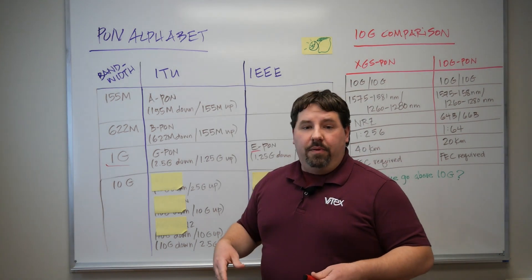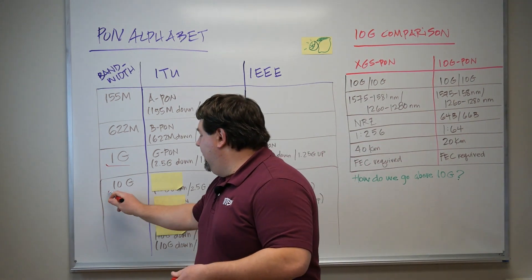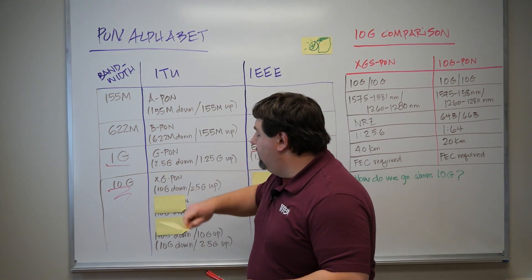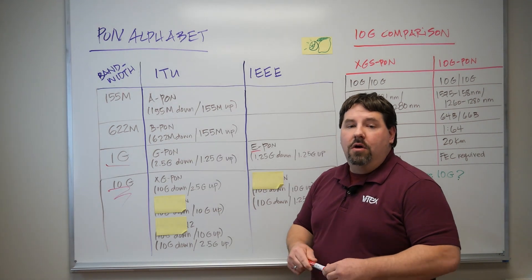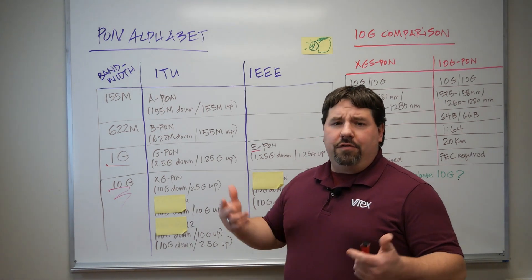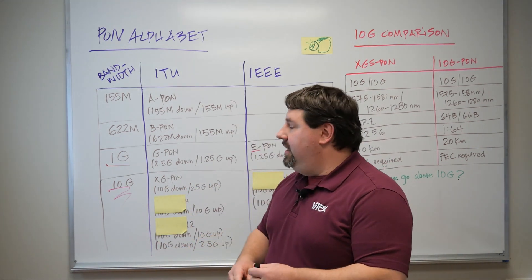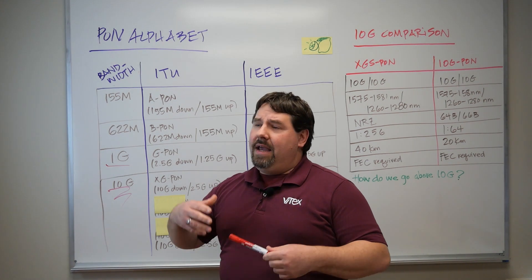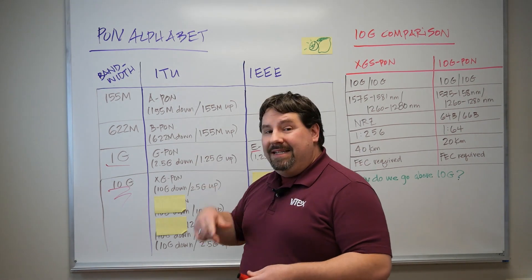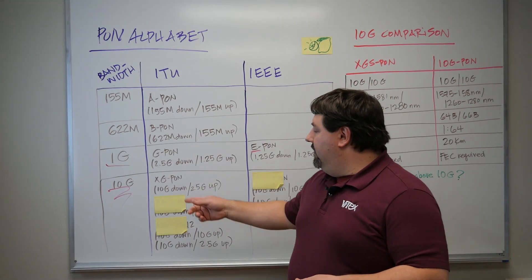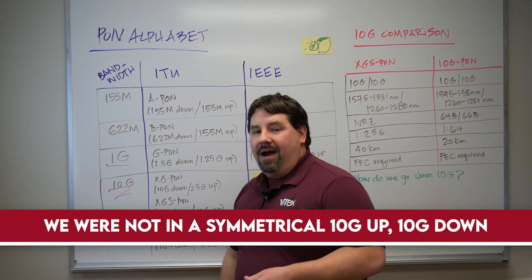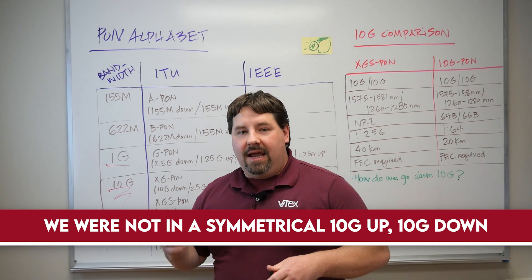Next, as we developed past one gig, we moved into 10 gig rates. The ITU has a couple of standards that came out over a period of time. The first one is XG-PON — what does X mean? It's a Roman numeral X, meaning 10 gig. So this is the first time we're breaking 10 gig on the downlink, but we were not yet at a symmetrical 10 gig up and 10 gig down.